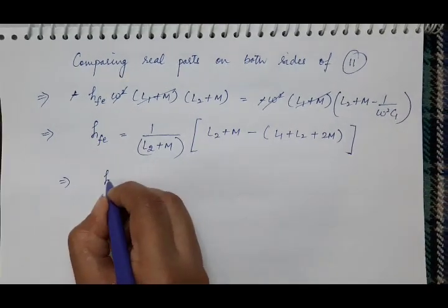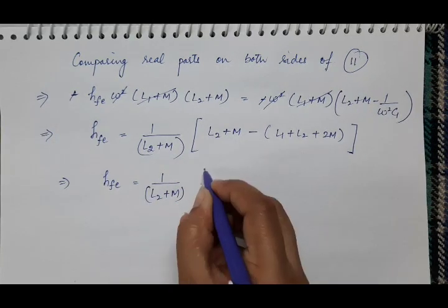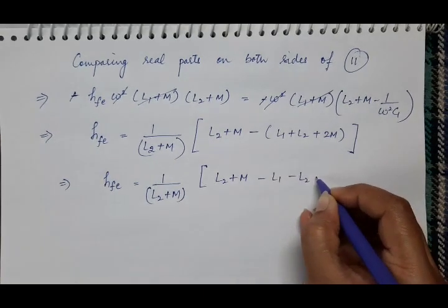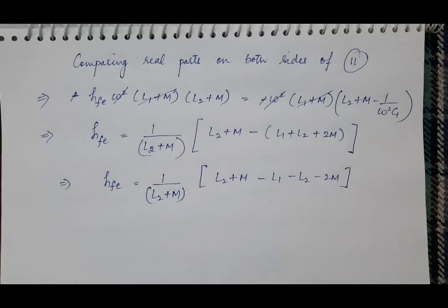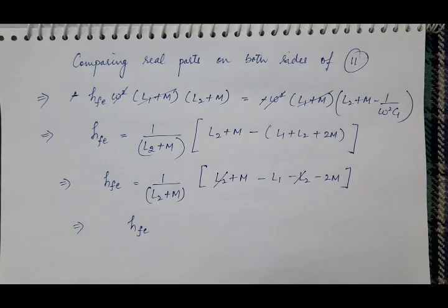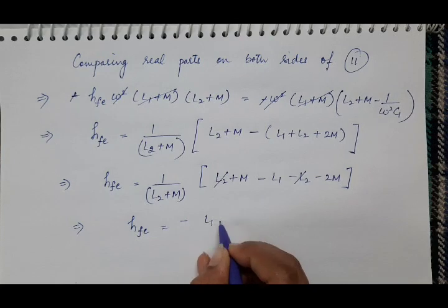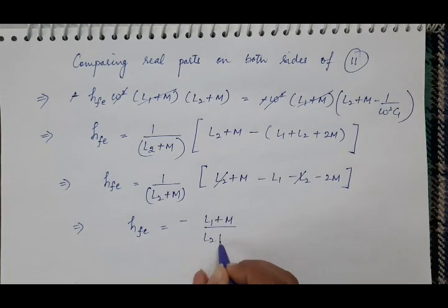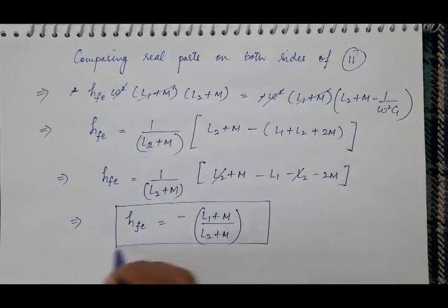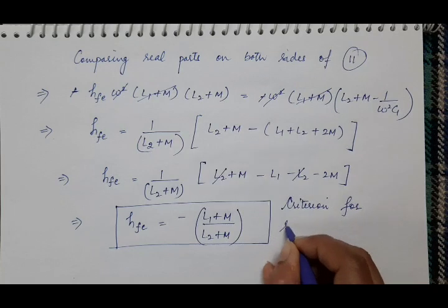Solving: hfe = [L2 + M − (L1 + L2 + 2M)] / (L2+M) = [L2 + M − L1 − L2 − 2M] / (L2+M). The L2 terms cancel, and −2M + M = −M, leaving −(L1+M)/(L2+M). Taking the negative common: hfe = (L1+M)/(L2+M). This is the criterion for sustained oscillations in the Hartley oscillator.